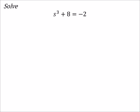So how would we undo an exponent? Well, then we're going to be using the roots. But we do need to isolate it first. So let's go ahead and subtract 8 from both sides first.